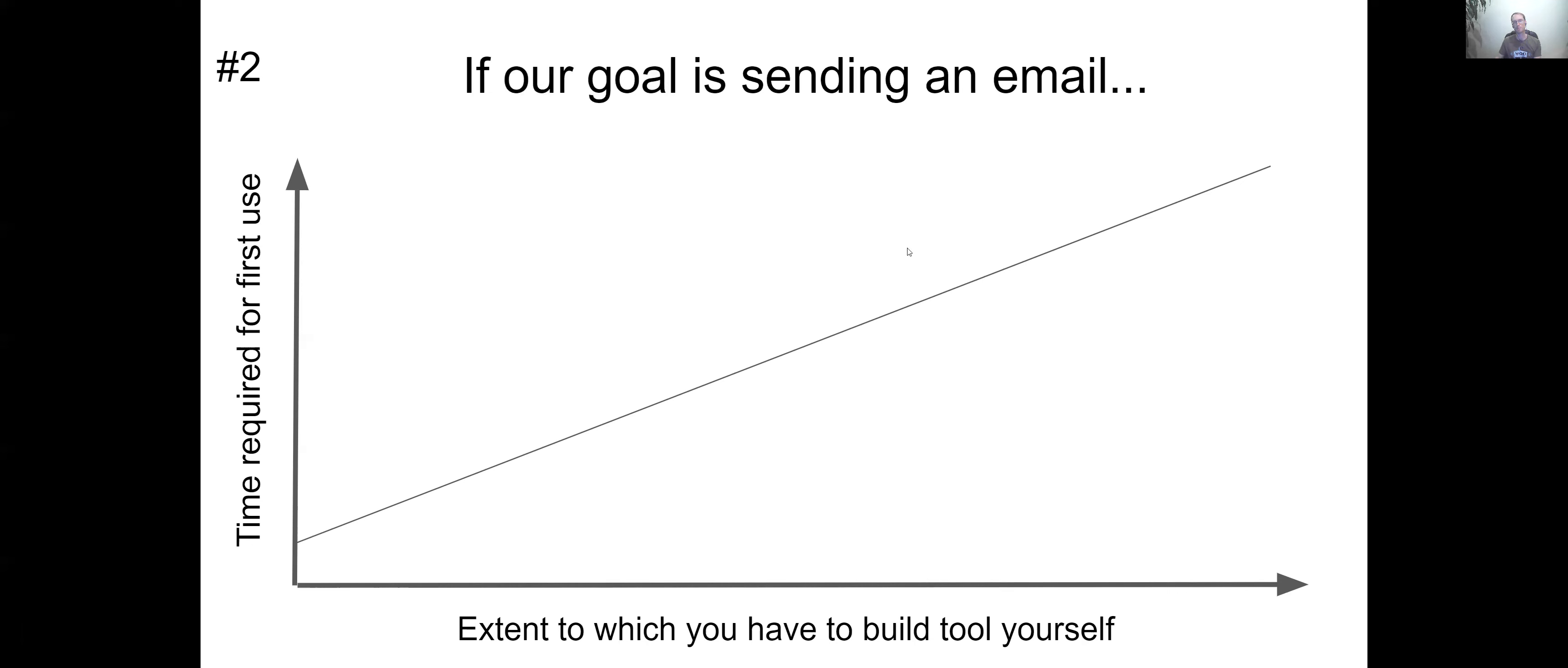What if our goal is sending an email? Microsoft 365 - we can just create an email account and we can send an email kind of right away. So again, I would put this down here, bottom left. It's already set up for us, works the same way for everybody, the time required for first use is really low, the extent to which we have to build the tool ourself is really low. If we wanted to send an email using Python, and not by connecting it to Microsoft 365 but by building our own email system that does the same thing, Python wouldn't be quite as practical as a tool like Microsoft 365, or another one - there's even free tools that send emails now. So building a tool that can send and receive emails might be overkill for Python.